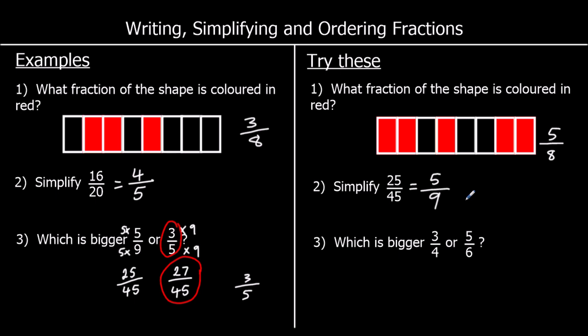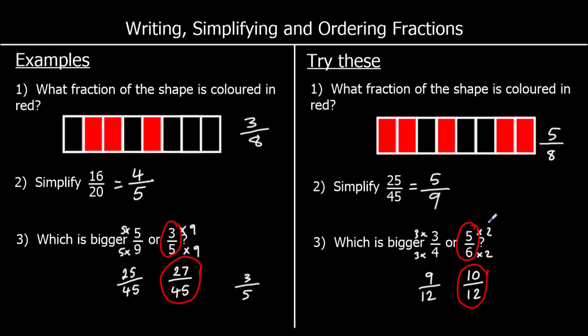Question three: which is bigger, three quarters or five sixths? We need to make the bottom numbers the same to compare them. 12 is in the four times table and the six times table. So we times the top and bottom of three quarters by three, and the top and bottom of five sixths by two, making them both out of 12. Three quarters becomes nine twelfths, and five sixths becomes ten twelfths. So ten out of 12 is more than nine out of 12 — five sixths is bigger.